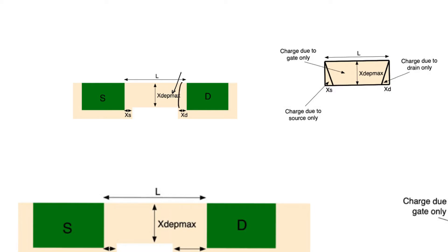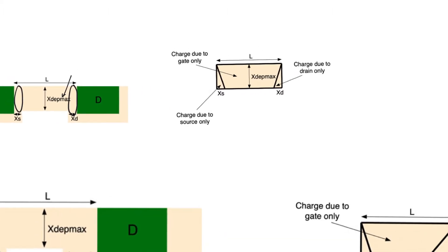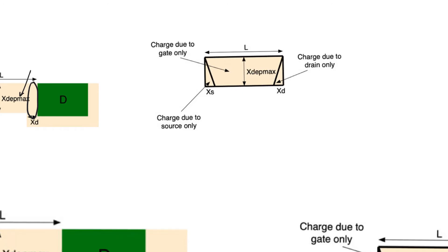A region around the drain is depleted by the drain, and a region around the source is depleted by the source. So if you look at the rectangle that represents the depletion charge under the gate, that rectangle is composed of an area controlled entirely by the drain, an area controlled entirely by the source, and an area controlled entirely by the gate. This shared zone can be thought of as two triangles — one formed entirely by the drain, and one formed entirely by the gate — and the same can be seen on the source side. Overall, the rectangle is formed of a trapezium and two triangles.